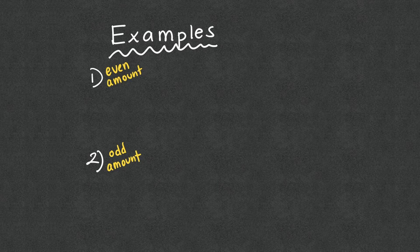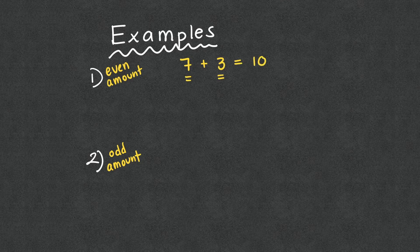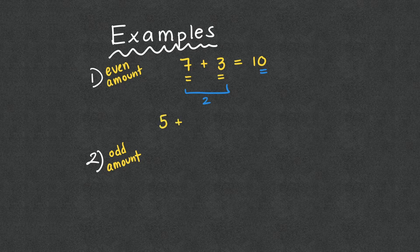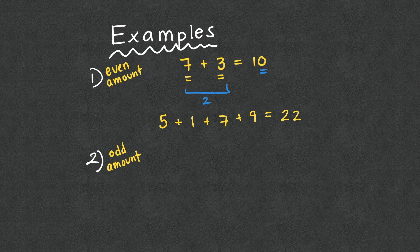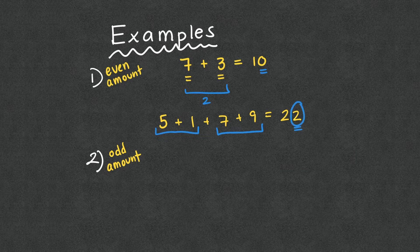For example, if we have seven plus three — seven's odd, three is odd — but we put them together it's even because it ends in a zero. So this was an even amount because we had two numbers. Say we had five plus one plus seven plus nine: five plus one is six, plus seven is 13, plus nine equals 22. This is a pair of two and a pair of two, which means our answer is going to be even, and it is — 22 is an even number. So if you have pairs of odd numbers, or an even amount of odd numbers, they are always going to give you an even number.